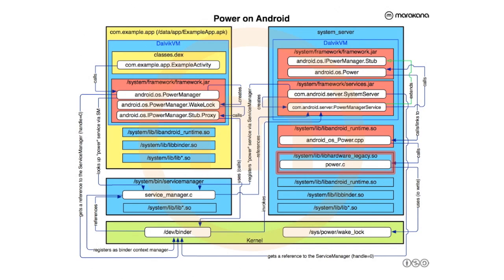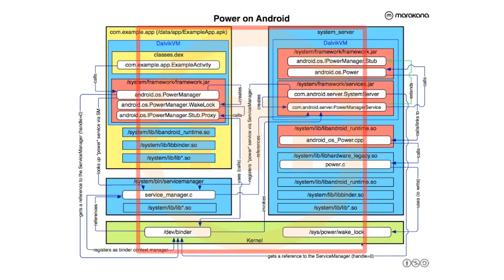The HAL function is implemented in power.c, part of libhardware_legacy.so. What it does is a simple write to /sys/power/wake_lock, passing the tag name and optional expiry. When releasing the wake lock, it goes through the same path, writing to /sys/power/wake_unlock to release it.